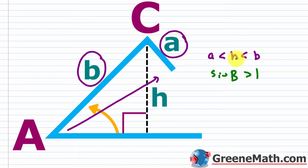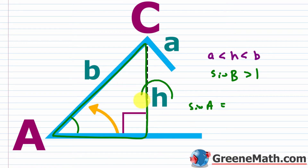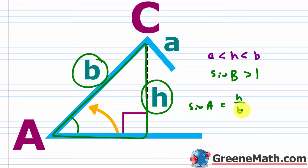To find H, think about forming a right triangle. The sine of A equals opposite over hypotenuse, which gives us H over b. So H equals b times sine of A. This is straightforward — you just plug in the known values.